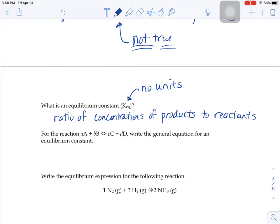So let's say I gave you this generic reaction. A moles of A plus B moles of B goes to C moles of C and D moles of D. And I asked you to write a general equation for an equilibrium constant. What you're going to do is put the products over the reactants.